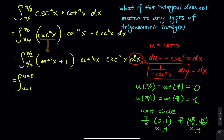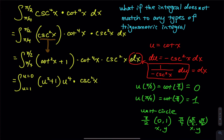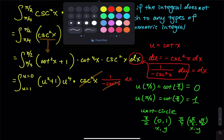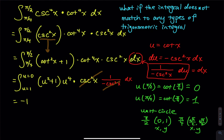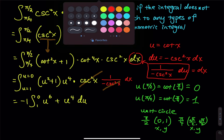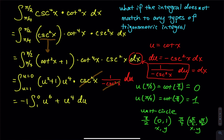The cotangent squared becomes u squared plus 1, and cotangent to the fourth becomes u to the fourth. We have cosecant squared x, and from the change of variable we multiply by 1 over negative cosecant squared x dx, so the cosecant squared cancels. But there is a negative. Let's put the negative 1 outside. So we have negative 1 times the integral from 1 to 0 of u to the sixth plus u to the fourth, du. Bringing the negative back in and distributing, that becomes the integral of negative u to the sixth minus u to the fourth, du.